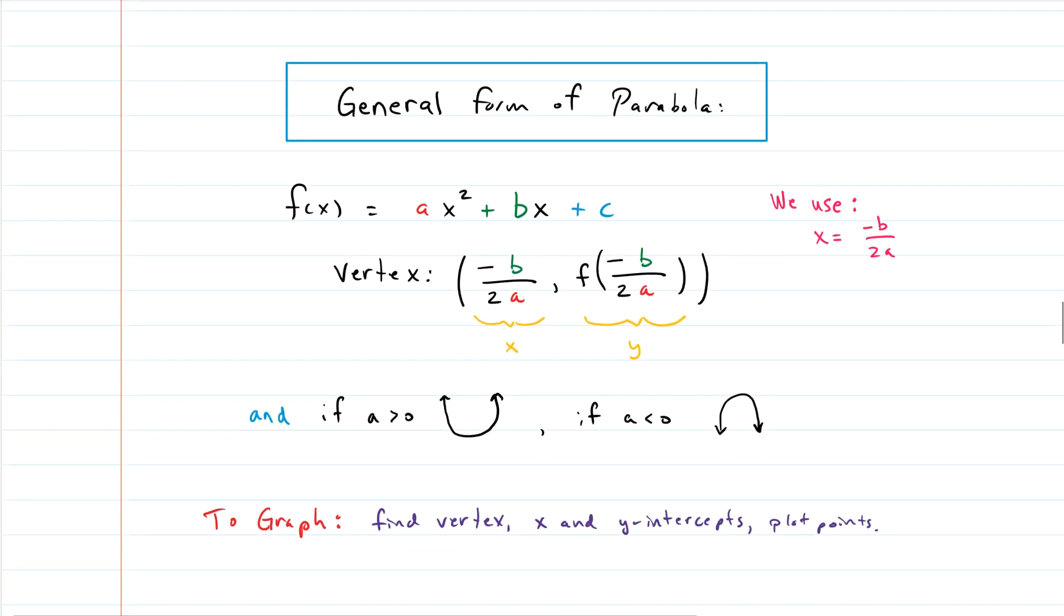All right. We now are looking at our general form of a parabola. And again, this is what we have, ax squared plus bx plus c. So to find the vertex, which again is an xy-coordinate, we're going to use this formula here. So the x value in the x-coordinate is going to be negative b over 2a. As you see here, negative b over 2a.